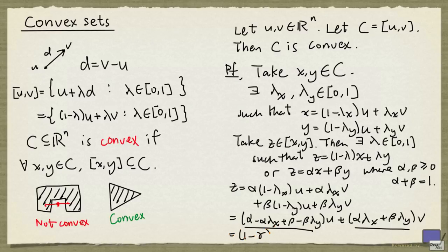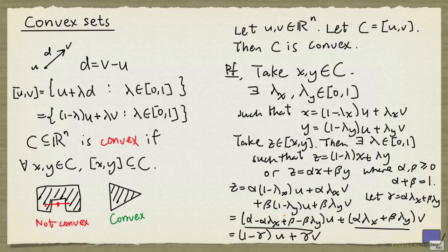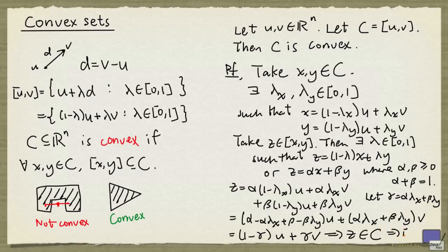So in particular, if we let gamma equal alpha times lambda_x plus beta times lambda_y, then z can be written as (1 minus gamma) times U plus gamma times V. The 1 comes from alpha plus beta, and this gamma is our defined quantity. Since 1 minus gamma is non-negative and gamma is non-negative, this means z is in the line segment between U and V, and so z is in C. Therefore every point in the line segment between x and y is in C, so C contains the line segment between x and y, and so C is convex.